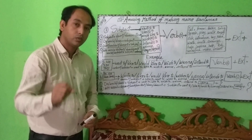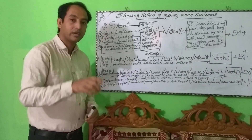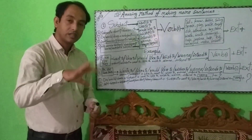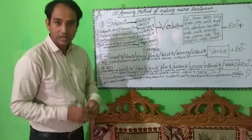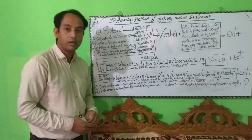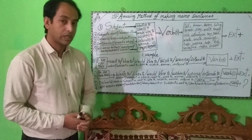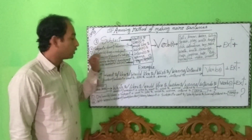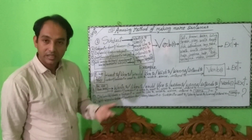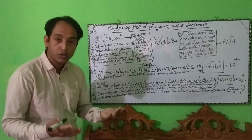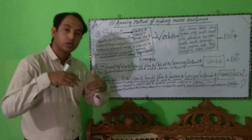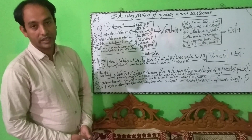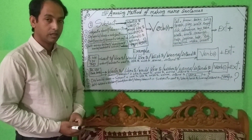If we use 'would,' we will not use 'do' or 'doesn't' — 'would' is a replacement for 'don't' or 'doesn't.' Except for 'would,' all these take 'don't' or 'doesn't' according to the subject. If the subject is third person singular number, you can use 'does' or 'doesn't.' For negative: I don't like to, I don't want to, I don't wish to, I don't intend to, I don't wanna do anything.